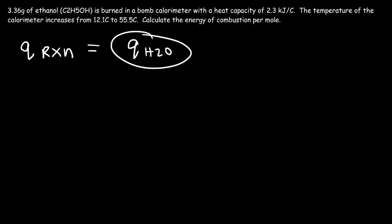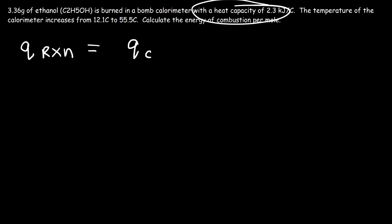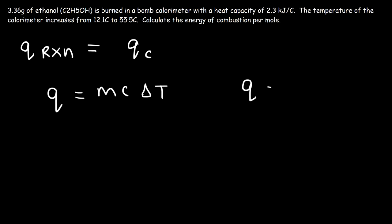We're not given the specific heat capacity of water or the mass of the water sample, so we calculate q absorbed by the calorimeter as a whole using its heat capacity. Be careful: if you're given specific heat capacity, use q = mcΔT; but if you're given heat capacity, use q = CΔT. The units confirm this — heat capacity has units of kilojoules per Celsius.